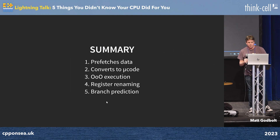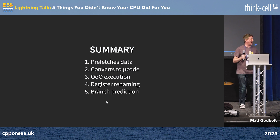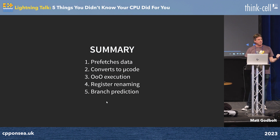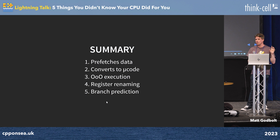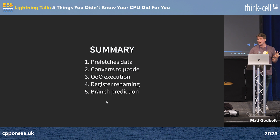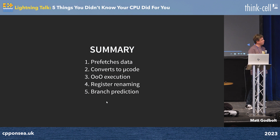In summary: it can pre-fetch data by looking at the misses and spotting a pattern — betting it would be good to get ahead of you. It turns all of the instructions into microcode, which is RISC-like instructions. It can reorder them arbitrarily if it can work out there are no dependencies between instructions. And in order to make that reordering even more effective, it can rewrite them to use different hardware registers internally. And it can predict the flow of your program to unlock even more parallelism.